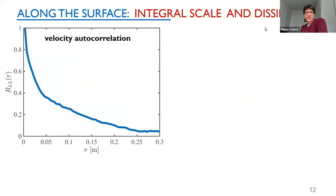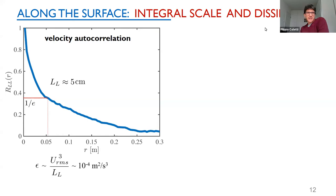Looking at integral scales and dissipation rate on the free surface: the velocity autocorrelation decays to nearly zero and I can fit an exponential to find an integral scale of order 10 centimeters, close to what I expect from injecting energy at the grid mesh spacing. The estimate of U_rms cubed over the integral scale gives a dissipation rate of order 10⁻⁴ m² s⁻³, consistent with the subsurface measurements.